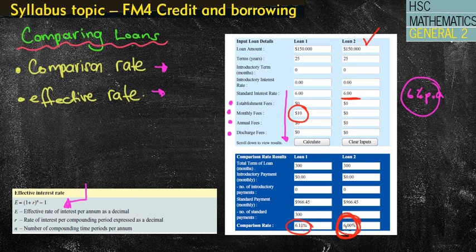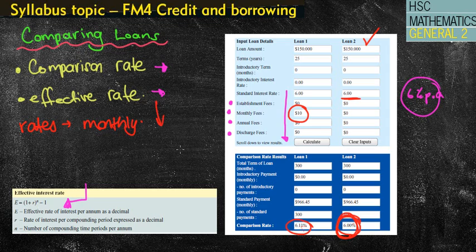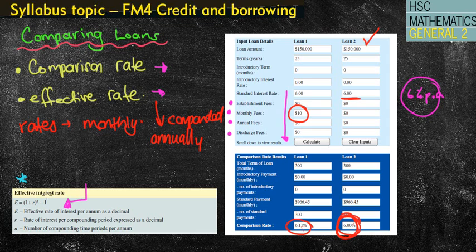So what is an effective interest rate? A lot of the questions we've been doing have had interest rates where we were paying things monthly — so when looking at home loans, we've done our interest rate divided over 12. What an effective interest rate does is recalculate it as an annually compounded rate. So it might originally be compounded monthly or fortnightly, but an effective interest rate would say: if it were compounded annually, this is what the actual interest rate would look like.